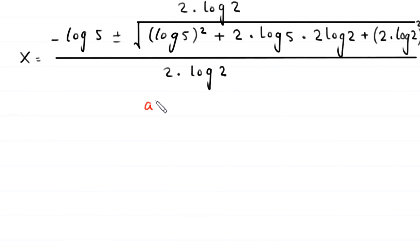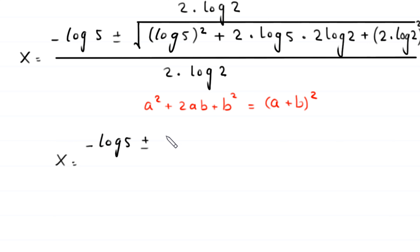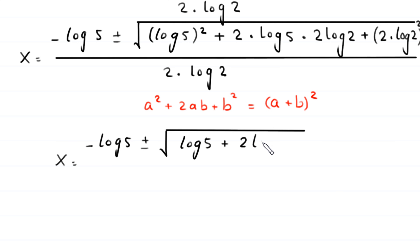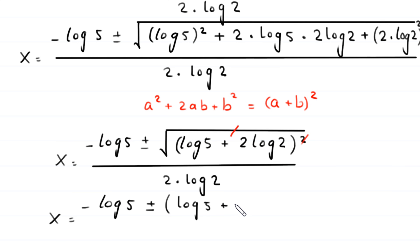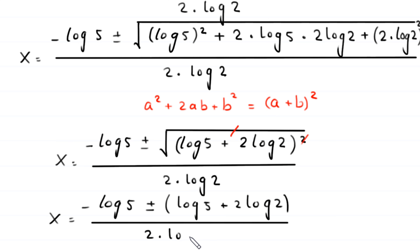Now by using the algebraic identity a squared plus 2ab plus b squared equals a plus b whole squared, this becomes x equals negative log of 5 plus or minus the square root of log of 5 plus 2 times log of 2, whole squared, divided by 2 times log of 2. Taking the square root, we are left with x equals negative log of 5 plus or minus log of 5 plus 2 times log of 2, divided by 2 times log of 2.